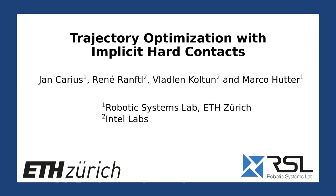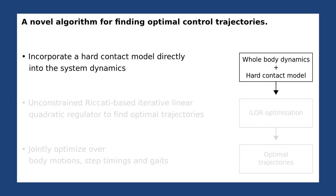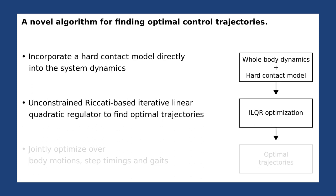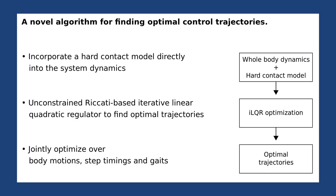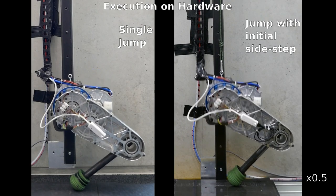Trajectory optimization with implicit hard contacts. We present a novel algorithm for finding optimal controlled trajectories. We incorporate a realistic hard contact model directly into the system dynamics. An unconstrained Riccati-based Iterative Linear Quadratic Regulator is used to find optimal trajectories. Our formulation jointly optimizes over body motions, step timings, and gaits. Generated motions, such as jumps, can be executed on hardware.